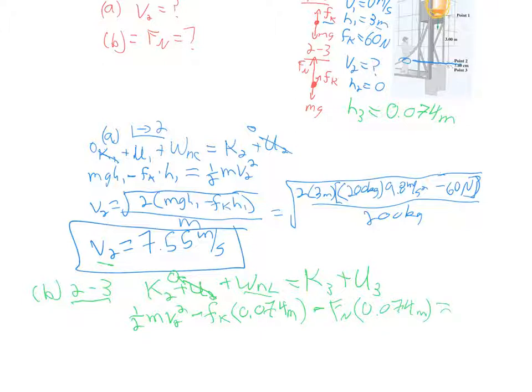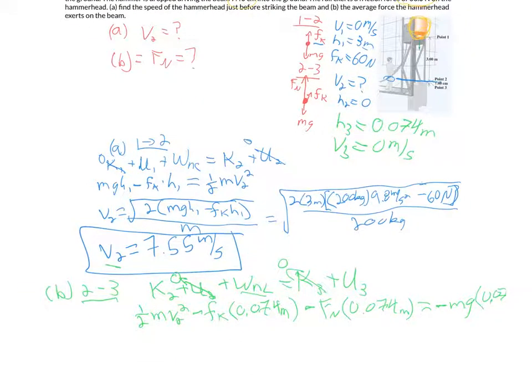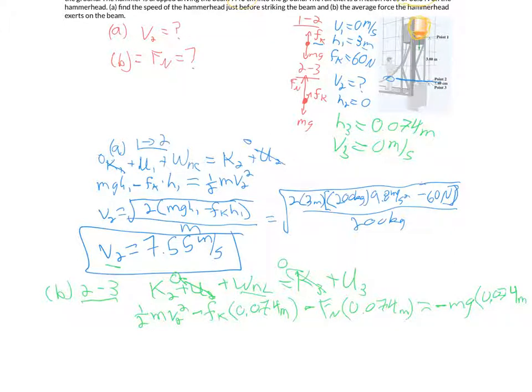And now that equals our final energy. It's coming to rest, so our kinetic energy, because V3 is zero, our final kinetic energy will be zero, and all we're left with is potential energy. And now, since the distance that it's down is actually negative, you're going to have a negative potential energy of Mg times that 0.074 meters. So now, in this equation, the only thing we do not know is the normal force. So you can go ahead and solve.